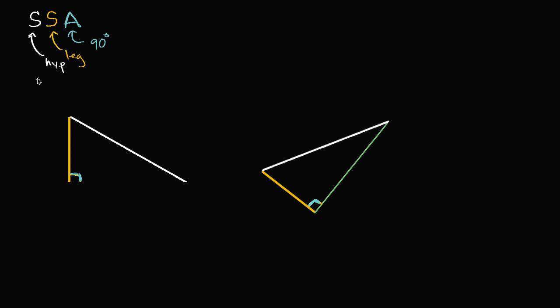That's why you'll sometimes see this, instead of calling it SSA for the special case of a right triangle, you'll sometimes see this as hypotenuse-leg congruence. Let me do this in the same colors so I'm consistent. Hypotenuse-leg congruence.